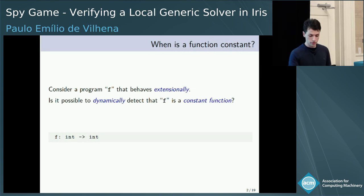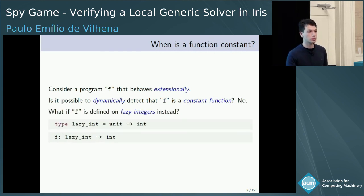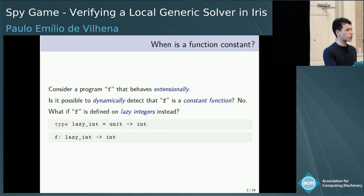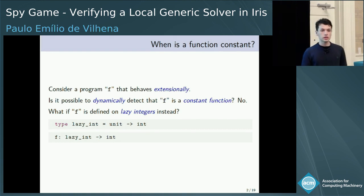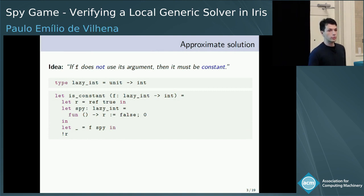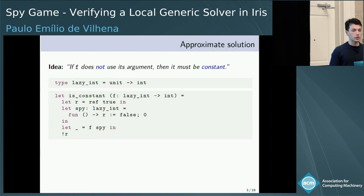Unfortunately, no — this is an undecidable problem. But what if we change the type of the argument of f from integers to lazy integers? Then there is an approximate solution. The idea is to check whether or not the program f uses its argument, whether or not it calls its argument.